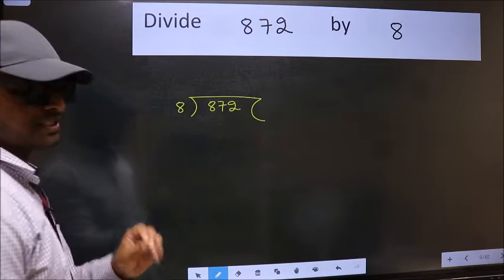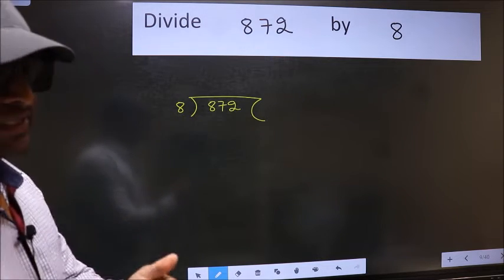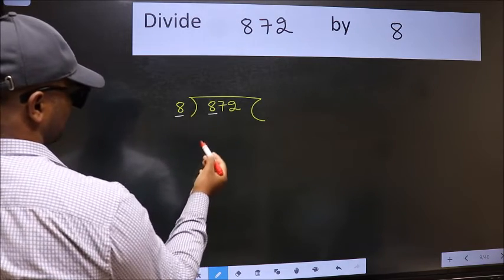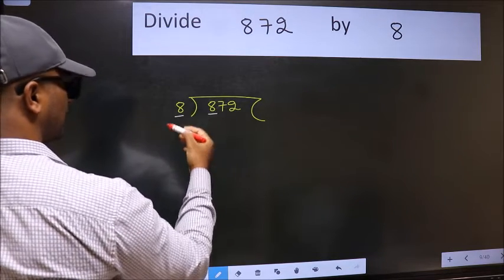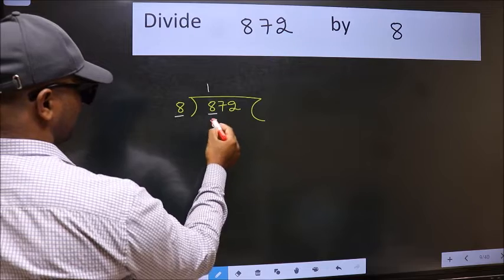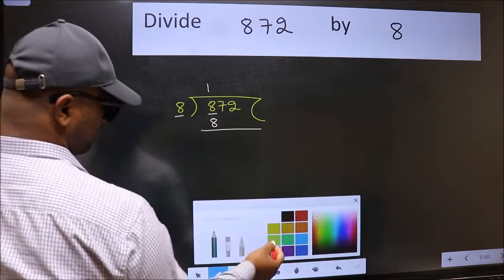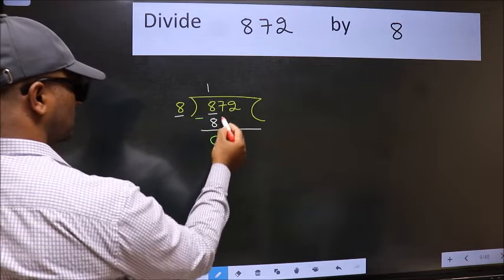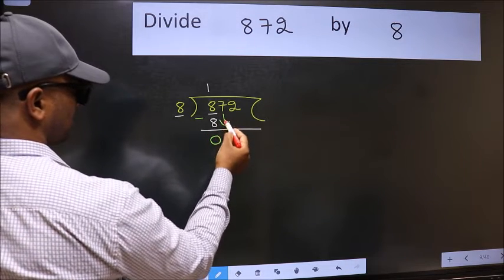This is your step 1. Next, here we have 8 and here 8. When do we get 8 in 8 table? 8 once 8. Now we should subtract, we get 0. After this, bring down the beside number, so 7 down.